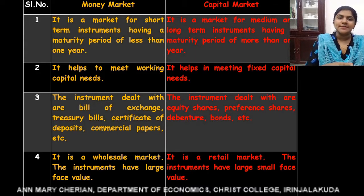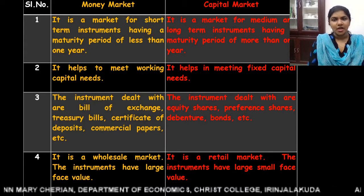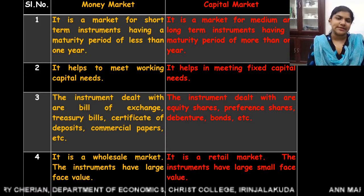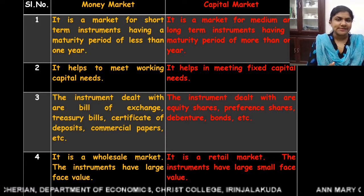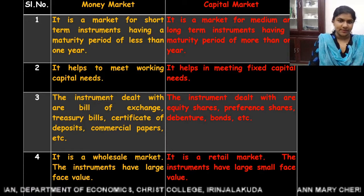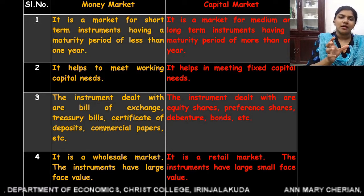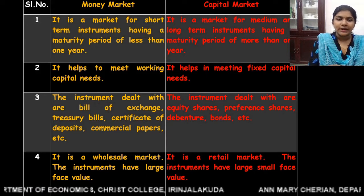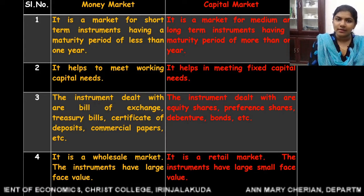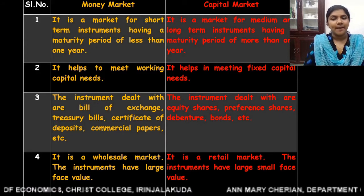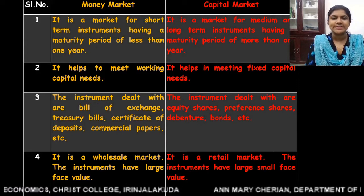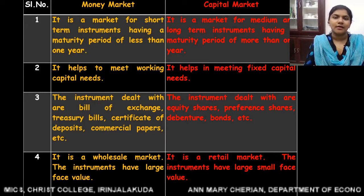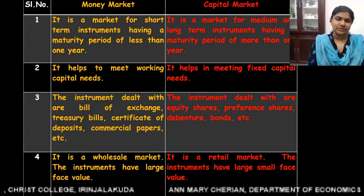The second difference: money market helps to meet working capital needs, whereas capital market helps to meet fixed capital needs. Money market is a market for short-term instruments, so it only gives short-term funds and meets working capital needs, whereas capital market meets fixed capital needs because it provides long-term funds for business units.